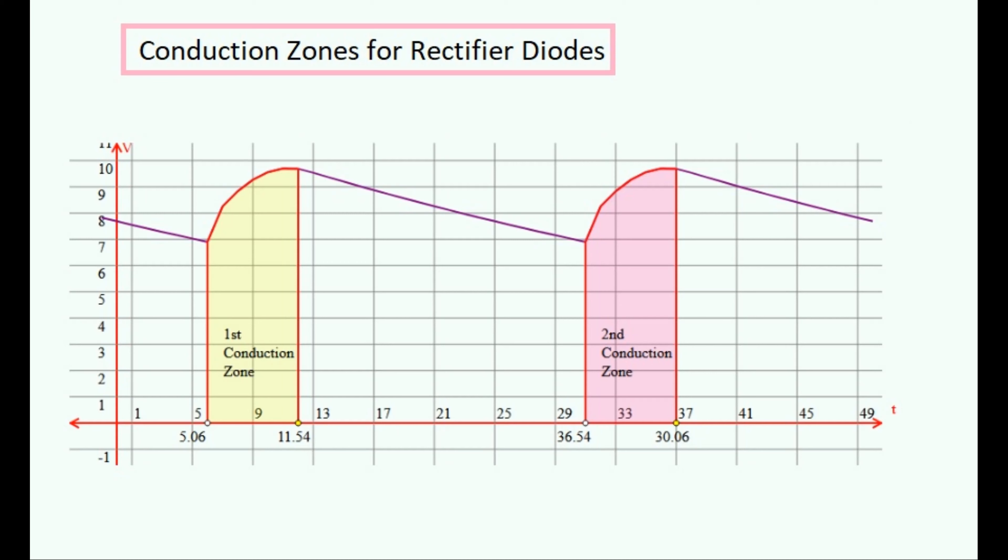If we consider the conduction zones of the diodes in a bridge rectifier, we can see that they look like these colored zones here and the resistance of these diodes will switch to a high value outside these zones and low value inside them.